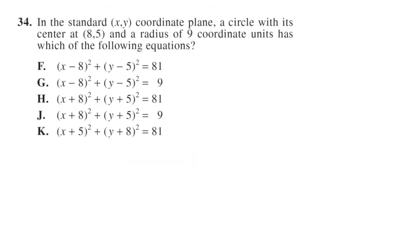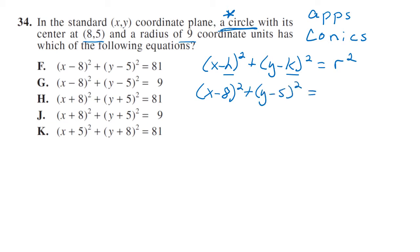In the standard (x,y) coordinate plane, a circle with its center at (8,5) and a radius of 9 coordinate units has which of the following equations? If you are on a TI-84 Plus calculator, you can get this in apps, conics. It's going to give you the formula for the equation of the circle. The formula is (x-h)² + (y-k)² = r², where h and k are the center 8 and 5. So (x-8)² + (y-5)² = 9² which equals 81.